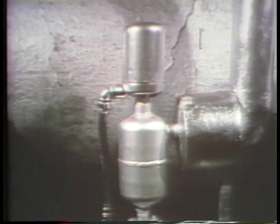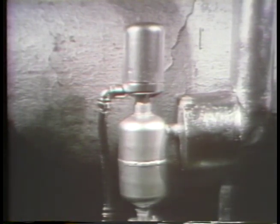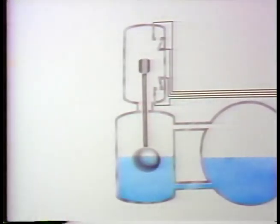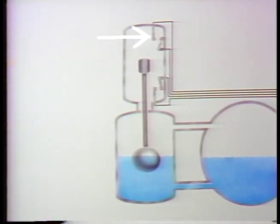Float devices can also be used to initiate alarms, usually by opening or closing contacts on an electrical switch. This is a typical float instrument that uses a magnetic switch to initiate level alarms on a feedwater heater. In this drawing, you see the float and the contacts for the magnetic switch. This is the switch for the high-level alarm, and this is the one for the low-level alarm.